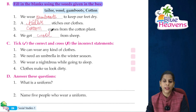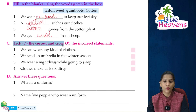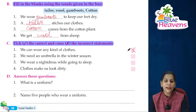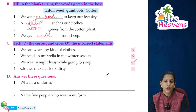Tick the correct and cross the incorrect statements: We can wear any kind of clothes — incorrect, because in different seasons we wear different types of clothes. We need an umbrella in the winter season — incorrect, we need an umbrella in the rainy season. We wear a night dress while going to sleep — correct. Clothes make us look dirty — incorrect, clothes make us look smart.